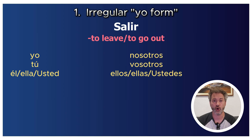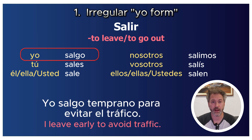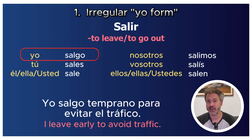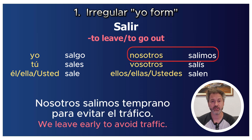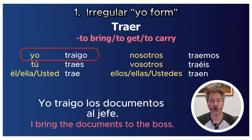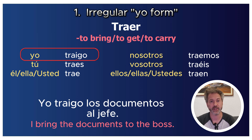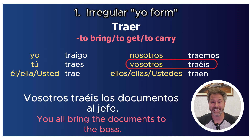There's a small irregular change to the ending in the yo form, and all other forms conjugate regularly. Salir becomes 'yo salgo' — 'Yo salgo temprano para evitar el tráfico' (I leave early to avoid traffic), while 'Nosotros salimos temprano para evitar el tráfico.' Traer becomes 'yo traigo' — 'Yo traigo los documentos al jefe' (I bring the documents to the boss), while 'Vosotros traéis los documentos al jefe.'